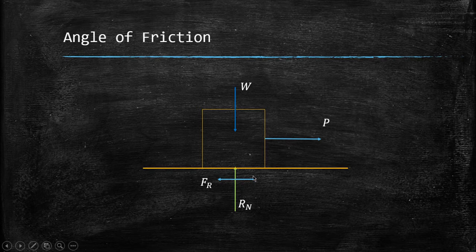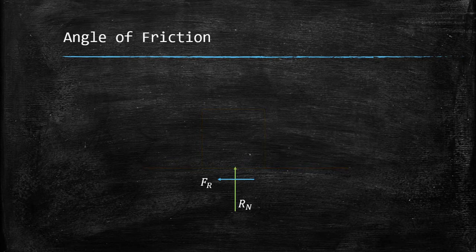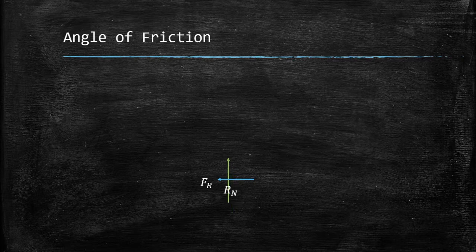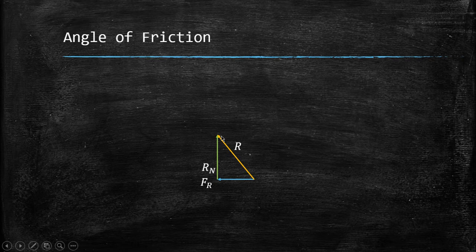FR is the reactive friction force and R is the normal reaction. Using the triangle law, we represent two forces: FR in blue, R in green. The resultant is yellow. If the resultant makes an angle phi with the normal reaction R, that angle is the angle of friction.